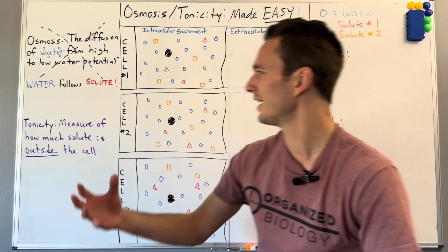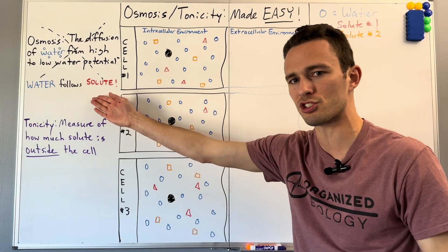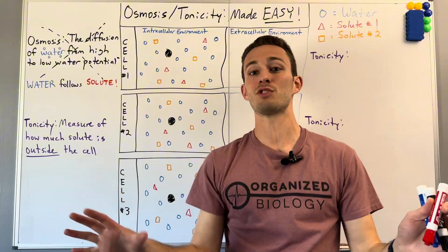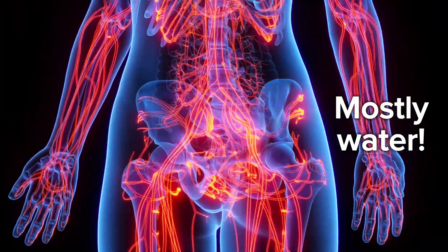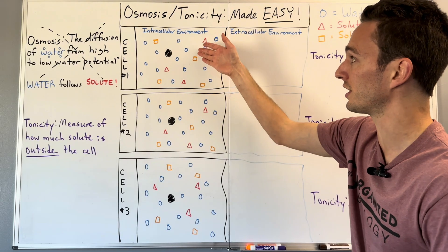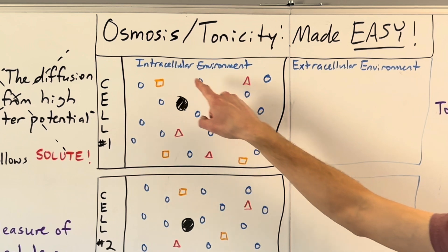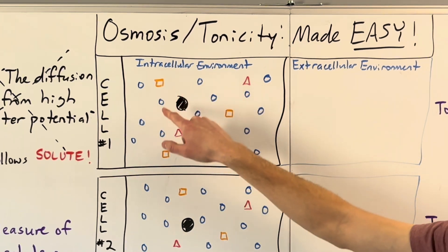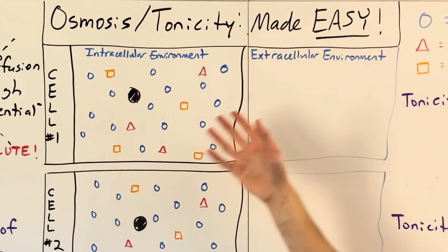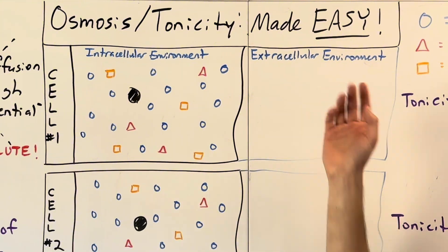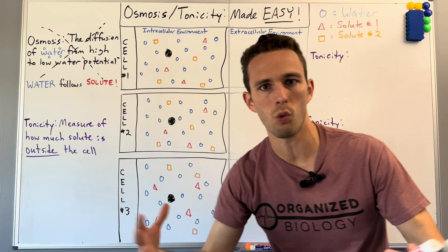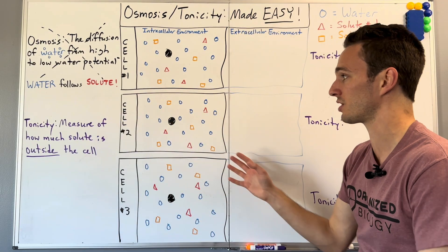So first, what is osmosis? Well, it's water just following solute. Your body's made of mostly water and consists of 30 trillion cells that have a pocket of water inside themselves, as well as an environment of water outside of themselves. That being said, it's not just water that's inside of these cells and outside.